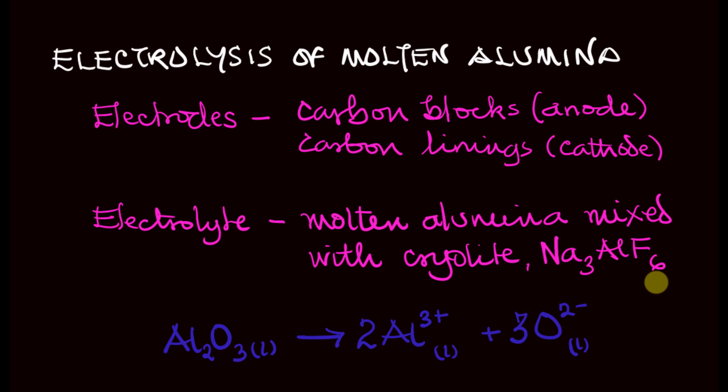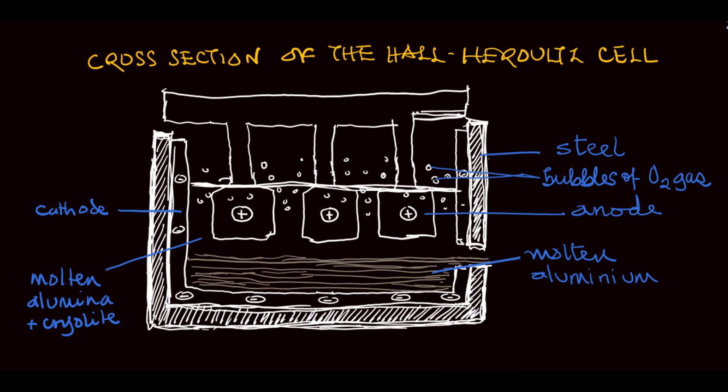When that happens, the molten alumina dissociates into aluminum ions and oxide ions. All this takes place in the Hall-Héroult cell, or the electrolytic cell. Now let's see how the Hall-Héroult cell looks like. This is a sketch of the cell, a cross-section of the Hall-Héroult cell used for the electrolysis of alumina.